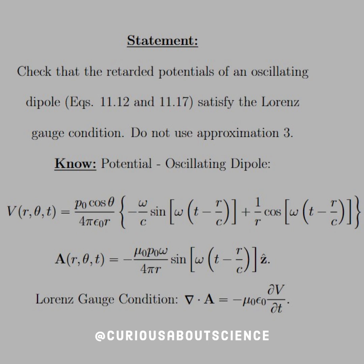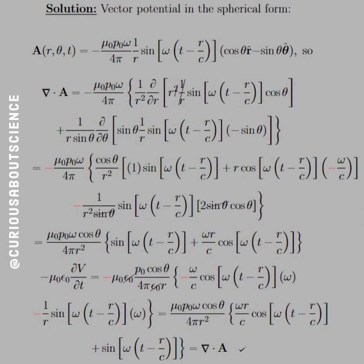The Lorenz gauge condition tells us that the divergence of A is equal to negative mu-naught epsilon-naught dV/dt. Okay? So now we know we just need to take the divergence and the time derivative and see if they're equal. So let's go. So with this vector potential, we need to write that z-hat in terms of a spherical representation, because that's where the variables are defined in.